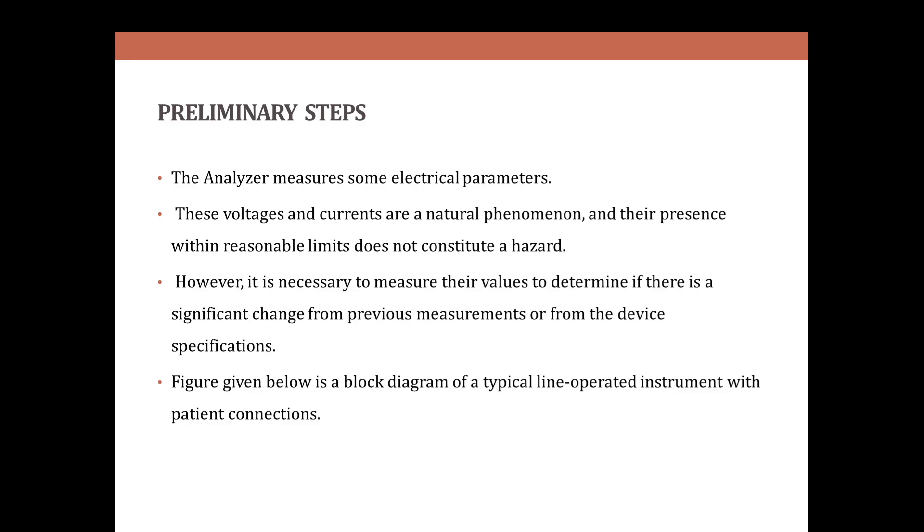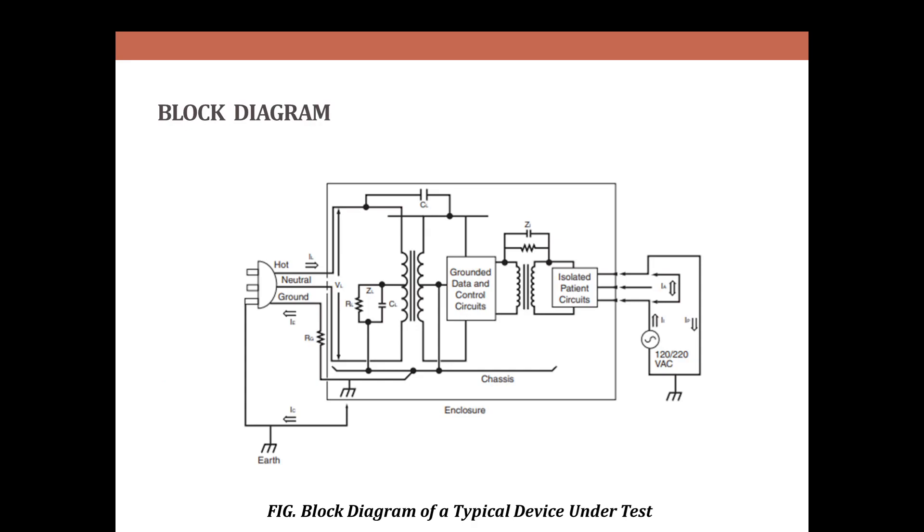We can determine the previous measurements or from the device specifications. The below figure shows the typical line-operated instrument with patient connections. This is the device under test which is connected with the analyzer. It is connected to the hard ground and neutral connections. This is isolated patient circuits and grounded data and control circuits connected via resistors and inductance.